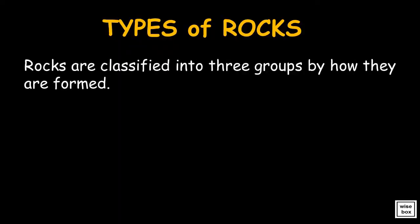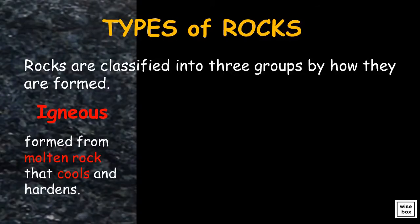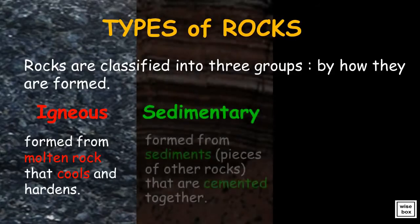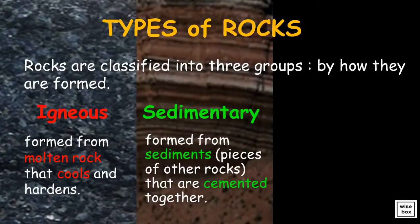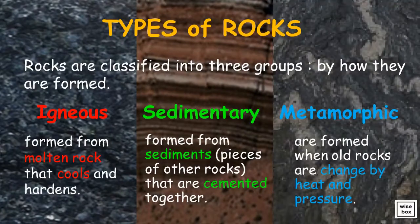Rocks are classified into three groups by how they are formed. Igneous rocks are formed from molten rock that cools and hardens. Sedimentary rocks are formed from sediments, or pieces of other rocks, that are cemented together. Metamorphic rocks are formed when old rocks are changed by heat and pressure.